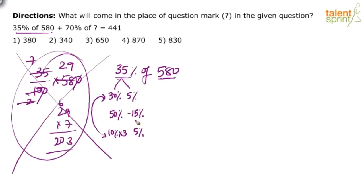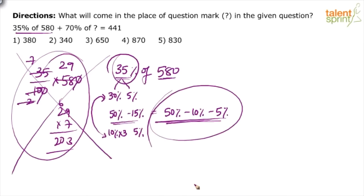So how do you split it? I can say 35% is 30% plus 5%, or 35% is 50% minus 15%, or 10% plus 25%. You decide what is most convenient. Or 10% times 3 plus 5%. Try to split the number and do the calculation really quick.